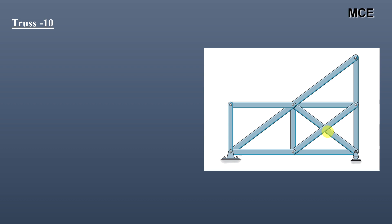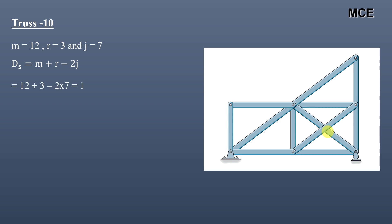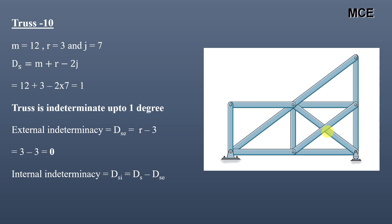For truss ten, this truss has 12 members, 3 reactions, and 7 joints. The total degree of static indeterminacy equals 1, meaning the truss is indeterminate to one degree. External indeterminacy is 0 and internal static indeterminacy is 1.